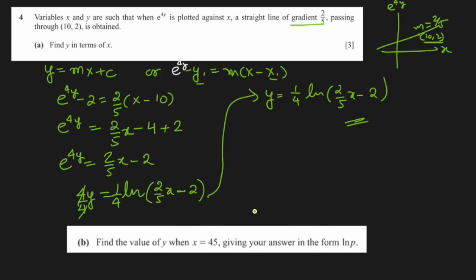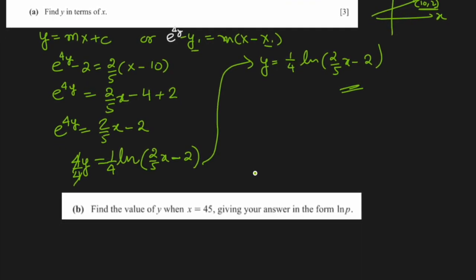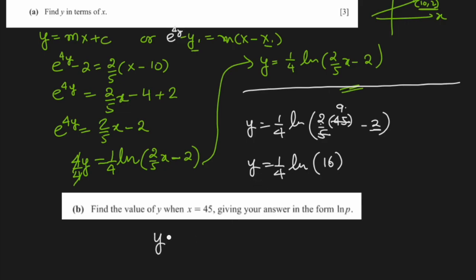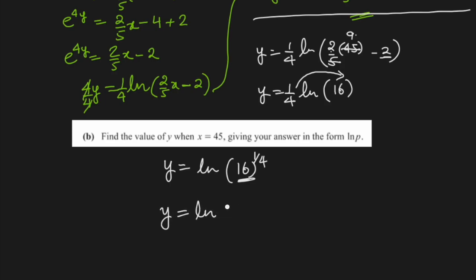For part b, find y when x = 45: y = (1/4)ln((2/5)(45) - 2) = (1/4)ln(18 - 2) = (1/4)ln(16). Using log laws, (1/4)ln(16) = ln(16^(1/4)) = ln(2). So y = ln 2 when x = 45.